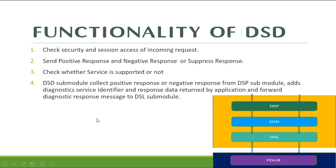DST also handles sending a positive response, negative response, or suppressed response. It also checks whether the service is supported or not — for example, if a service is not configured, it will send NRC 0x11. For instance, if SID 0x22 is not configured, DST will send NRC 0x11 service not supported. DST collects the positive or negative response from the DSP module, adds the service identifier and relevant response data from the application, and forwards this to DSL.